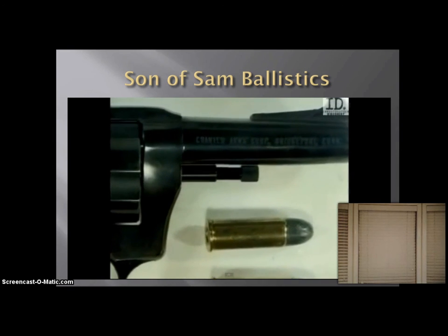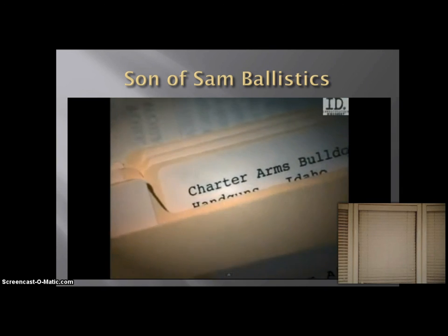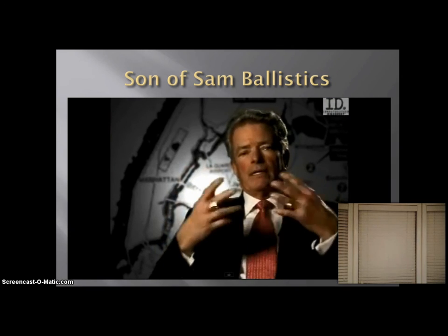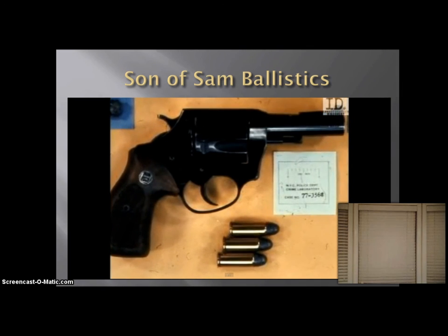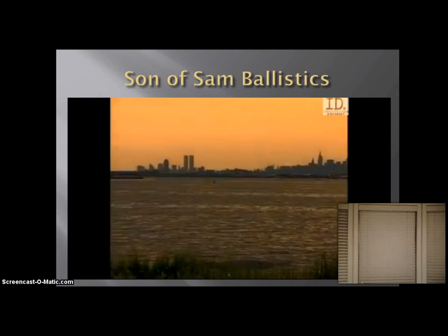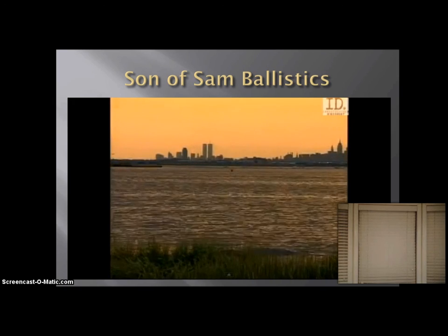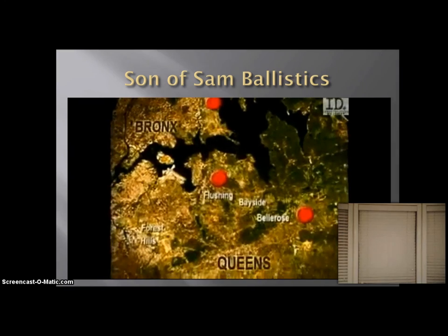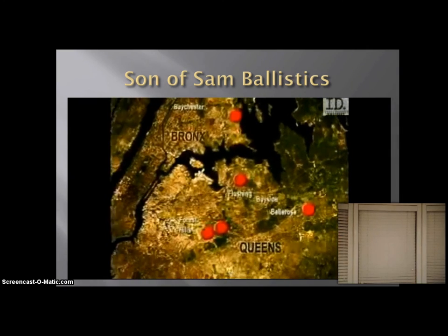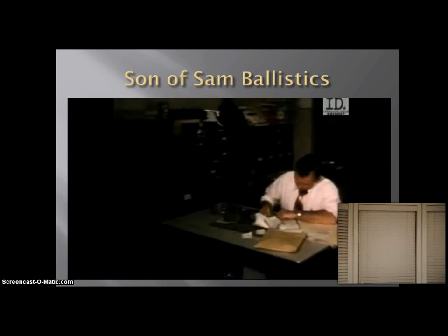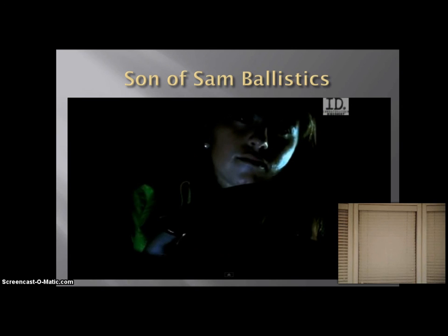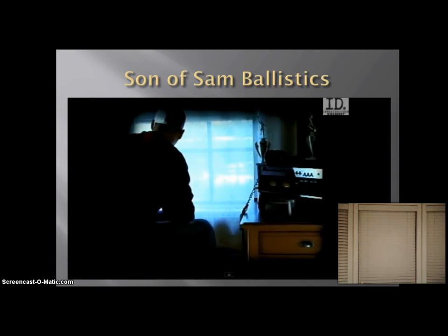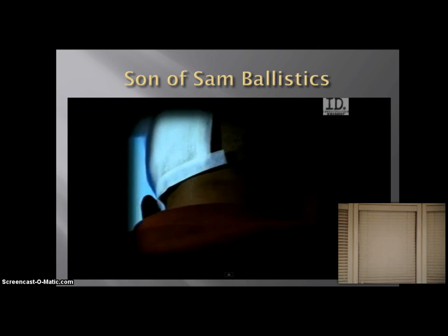Detectives began a nationwide search for Charter Arms Bulldog guns. We checked them nationwide — we went through the printout of all the Charter Arms Bulldogs and checked every one we could find. They found thousands of Bulldogs across the country. Someone in New York had one and was using it regularly. The killer had attacked in two New York boroughs, the Bronx and Queens. Police investigated survivors for any hint of a pattern. Joanne Amino was shot in the spine and was paralyzed from the waist down. Donna DeMossi and Jody Valenti would recover from their injuries. Carl DeNaro would also recover after a metal plate was installed to replace his shattered skull.